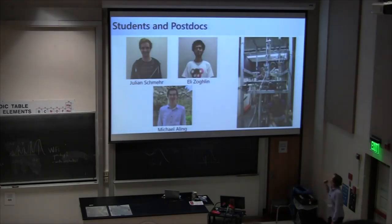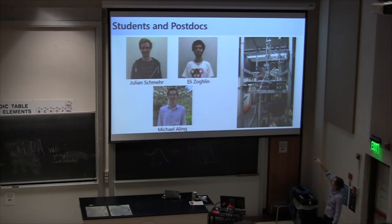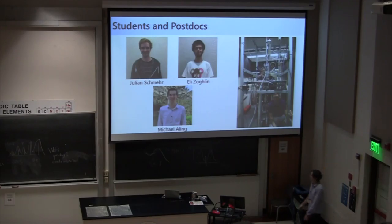When I start talking about some of our floating zone work, the students and postdocs who have done the lion's share of the work: first, Julian Schmerer, who was a postdoc in my group and is now at an x-ray detector company in Germany — he really spearheaded our development of a high-pressure floating zone furnace. Eli, a current graduate student, has really helped Julian a lot and is now taking over as lead of our high-pressure growth efforts. We've also had a remarkable undergraduate, Michael Ayling, who helped with a lot of the design work and is now pursuing his master's degree at Cambridge.